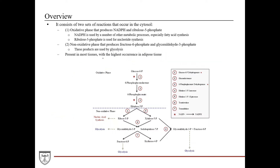The pentose phosphate pathway consists of two phases: the oxidative phase and the non-oxidative phase, divided by a dotted line, and both sets of reactions occur in the cytosol. The oxidative phase mainly produces NADPH, which is analogous to NADH as an electron carrier, and ribulose 5-phosphate, which is used for nucleotide synthesis.